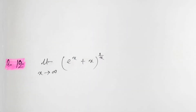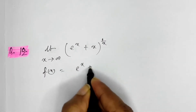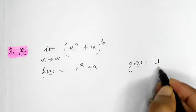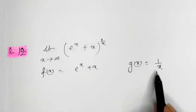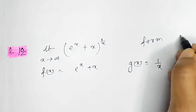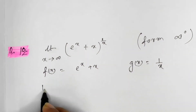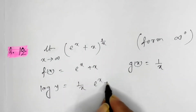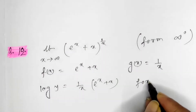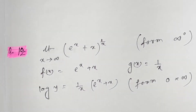Similarly for f(x) = e^x + x and g(x) = 1/x, with x tends to infinity: f(x) → ∞ and g(x) → 0. This is in the form of infinity to the power 0. Taking log on both sides: log y = (1/x) · log(e^x + x). This is now in the form of 0 · ∞, which can easily be converted to 0 by 0 form and solved.